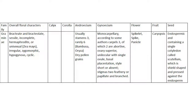The female or gynoecium part is monocarpellary. According to some authors, carpels are three, of which two are abortive. Ovary is superior, unilocular with a single ovule, basal placentation, style short or absent, stigmas two, feathery or papillate and branched.